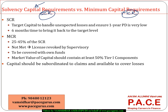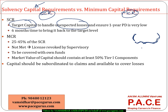When I say SCR, it is the amount of capital required to handle the unexpected losses. For an insurance company, if I compute the unexpected losses, I need to have this much capital — meaning assets minus liabilities. If I am expecting these are my unexpected losses during the year, this should be present in the form of capital. The intention is to ensure that the probability of default in the next one year is very, very low.